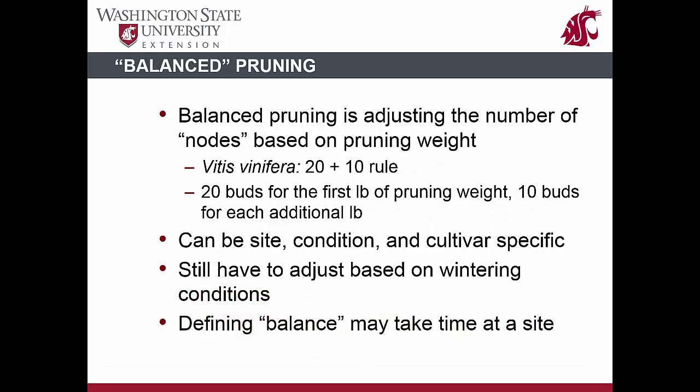Balanced pruning is a pruning method that accounts for vine vigor. Buds are not retained on a per foot of row basis, but rather on a basis related to the amount of vegetative growth on the plant. In Vitis vinifera, the equation for balanced pruning is 20 plus 10 — 20 buds for the first pound of pruning weight and 10 additional buds for each additional pound of pruning weight. This is achieved by doing a quick standard pruning on a single vine, leaving longer spurs, weighing those cuttings, and then determining if more woody tissue and buds need to be removed or not. Balanced pruning will be site-specific because it is dependent on vine vigor, and it may take a few pruning cycles to truly determine the balance at a site.